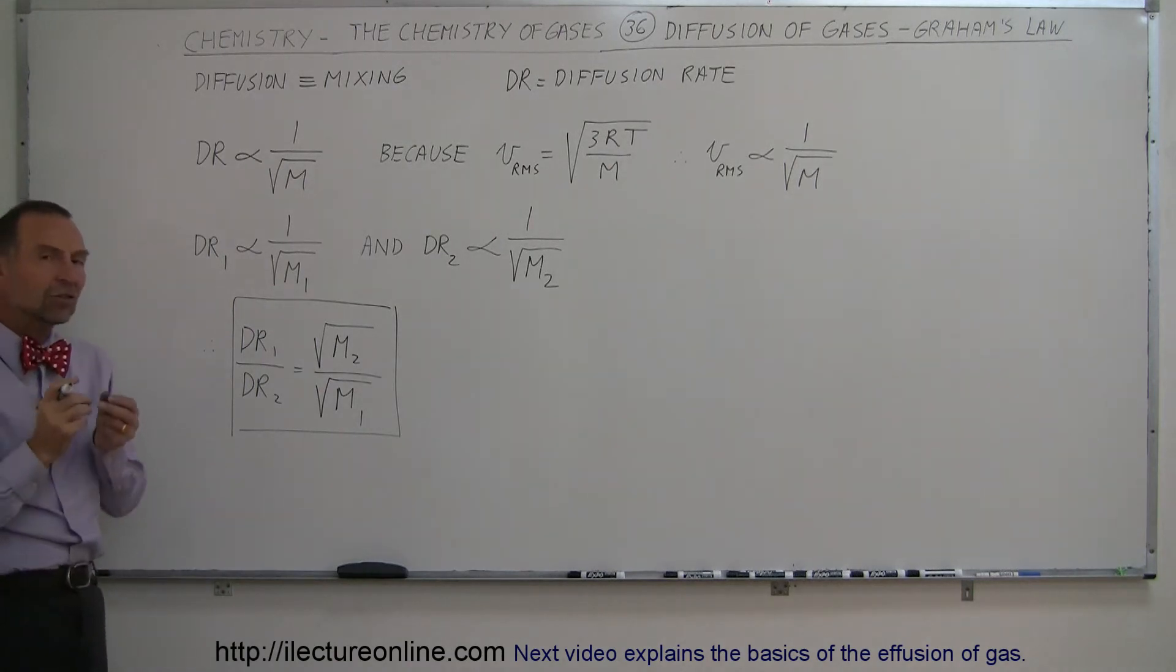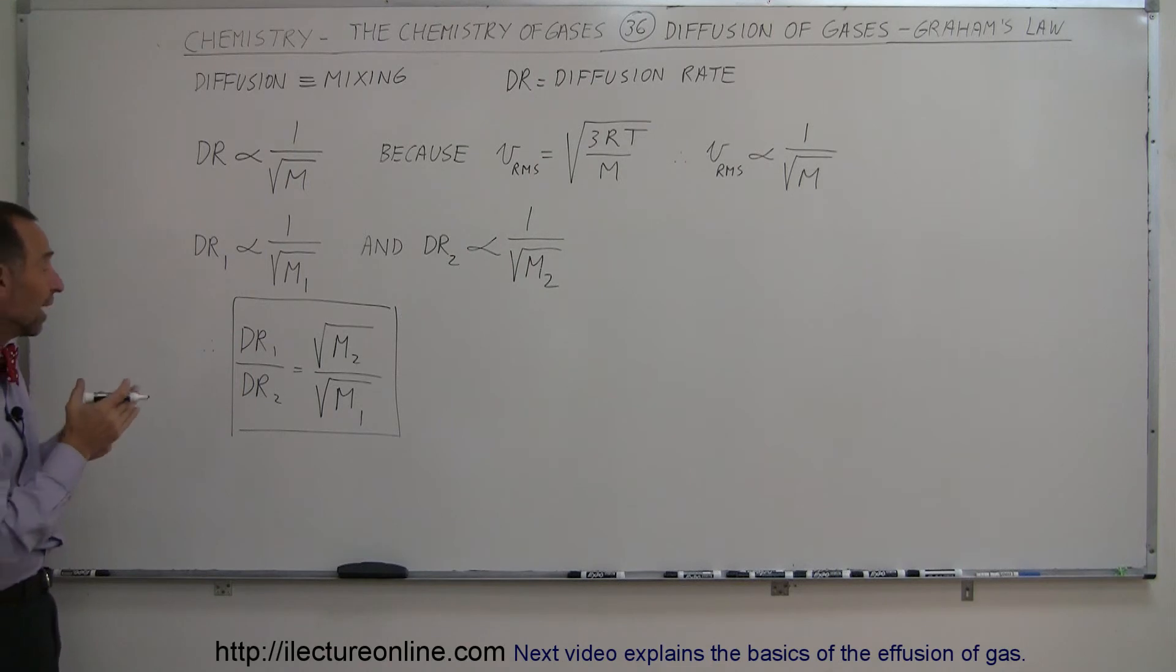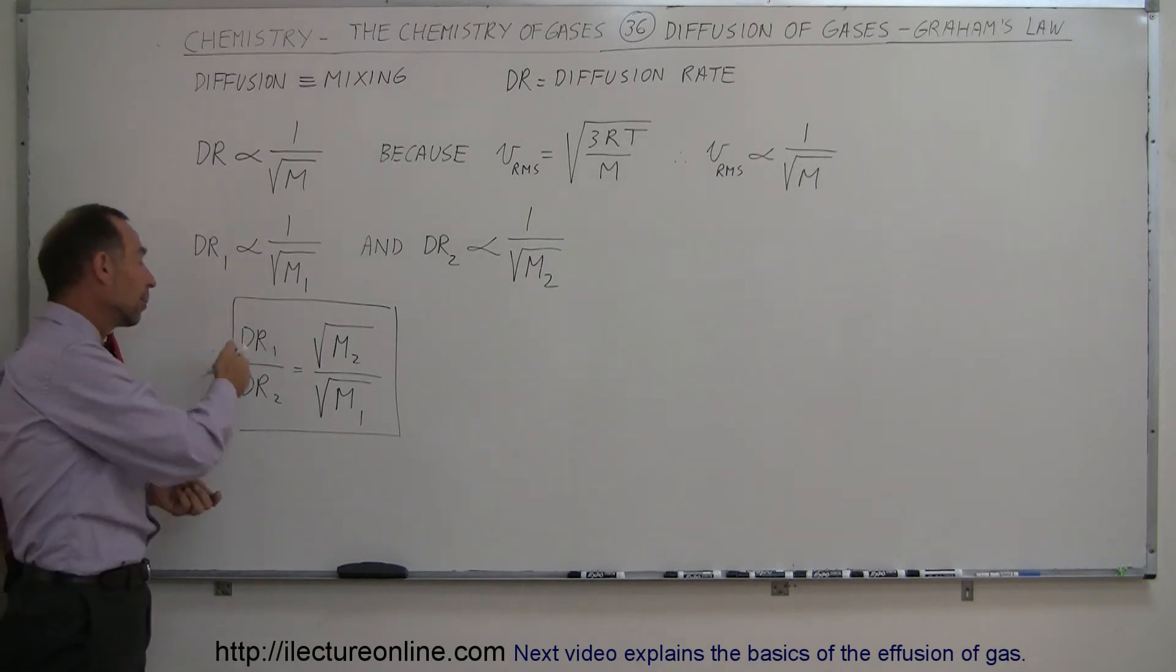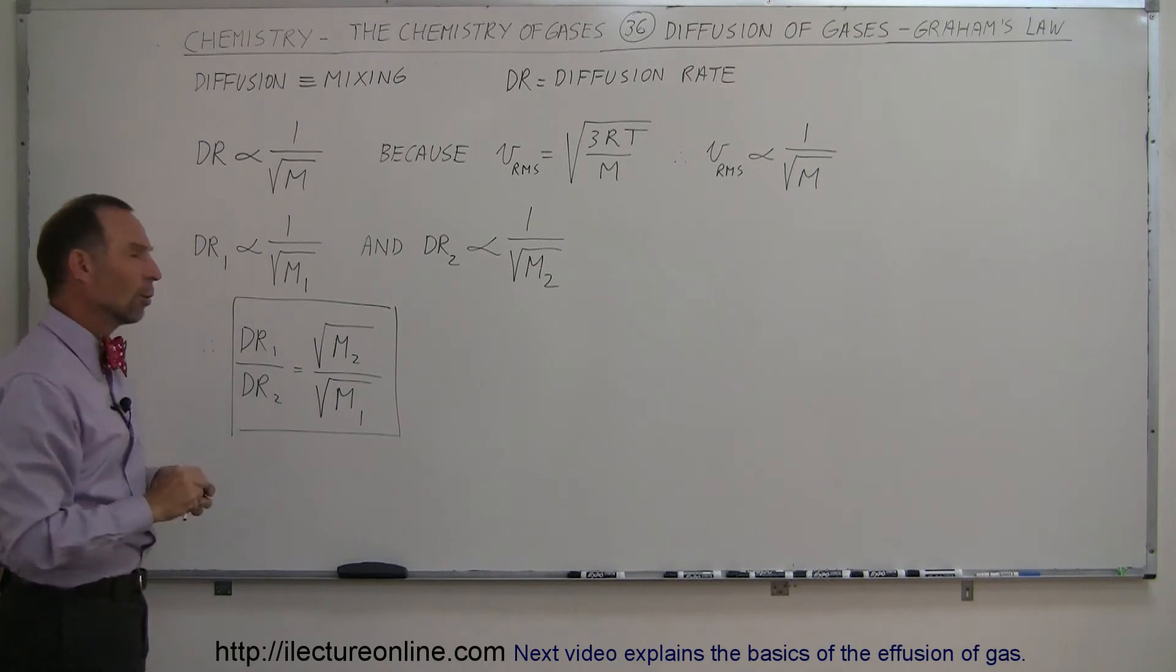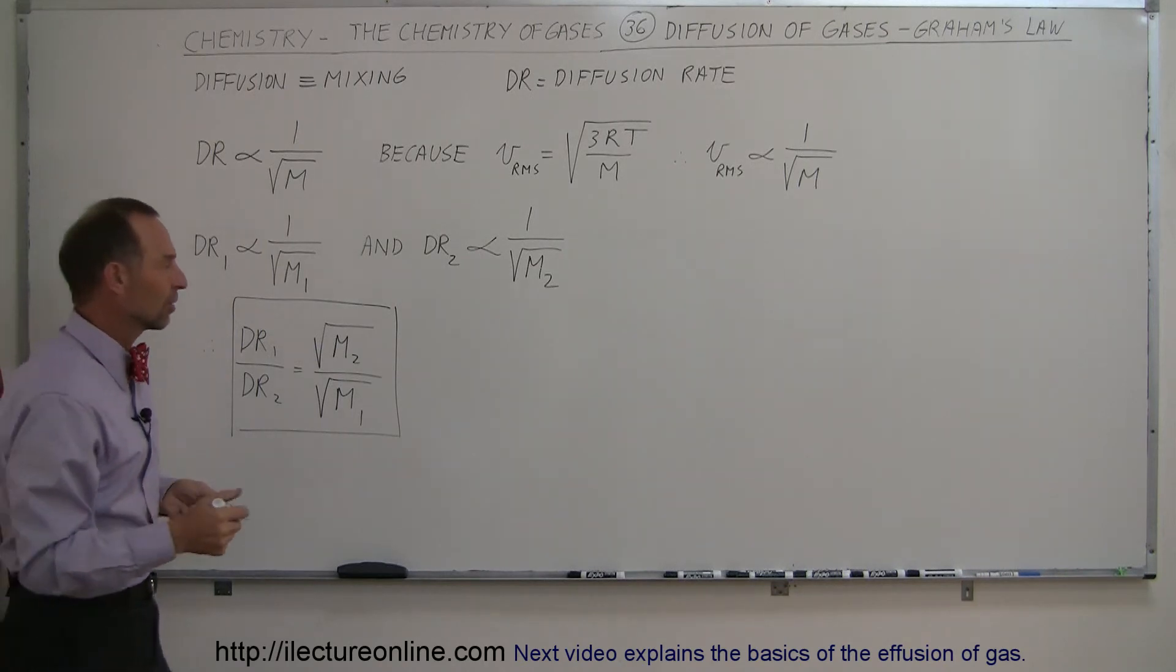So, we didn't actually calculate how fast gases diffuse, we just said that we know the proportionality of the ratios is according to this, which means, let's say, let's take two gases, for example.